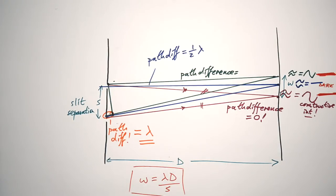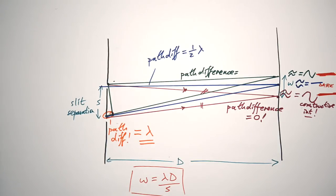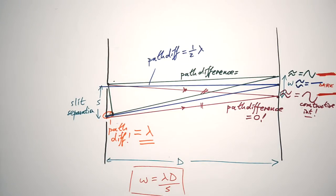If the path difference is a multiple of the wavelength — one λ, two λ, three λ — then the rays arrive in phase and you get constructive interference, giving a bright fringe. If the path difference is a multiple and a half of the wavelength, the waves arrive 180 degrees out of phase, giving destructive interference and a dark fringe.